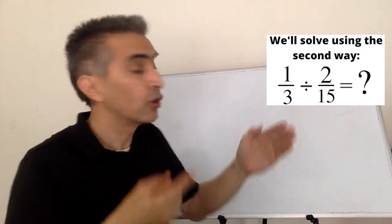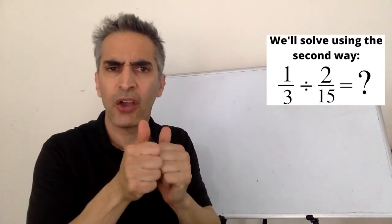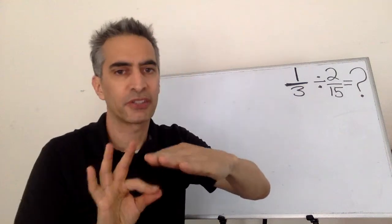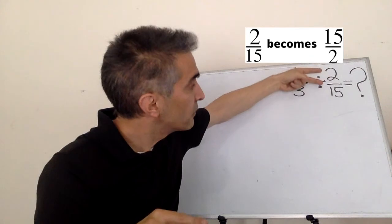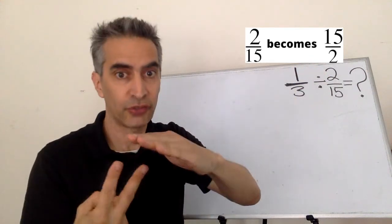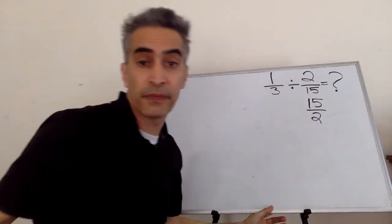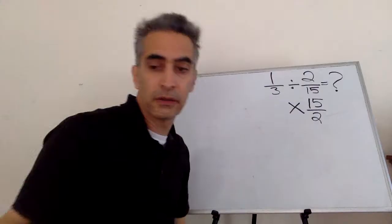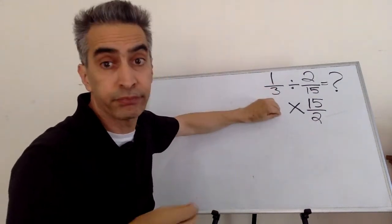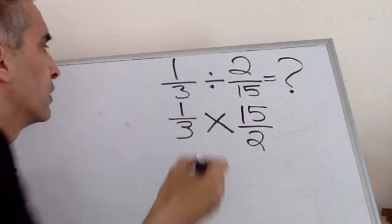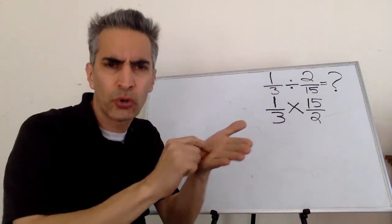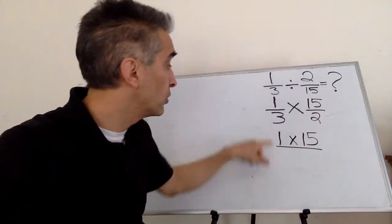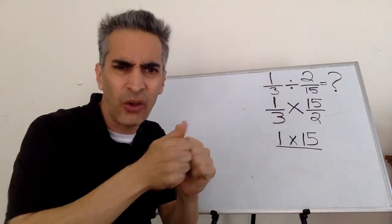Another example: 1 third divided by 2 fifteenths. We're going to solve this using the second way. Notice this number is a fraction — this 2 fifteenths. We're going to have to flip it, and it's going to become 15 over 2. This division sign becomes multiplication. The 1 third, we're going to put it right here. Next, 1 times 15, and 3 times 2, we're going to write it like this.